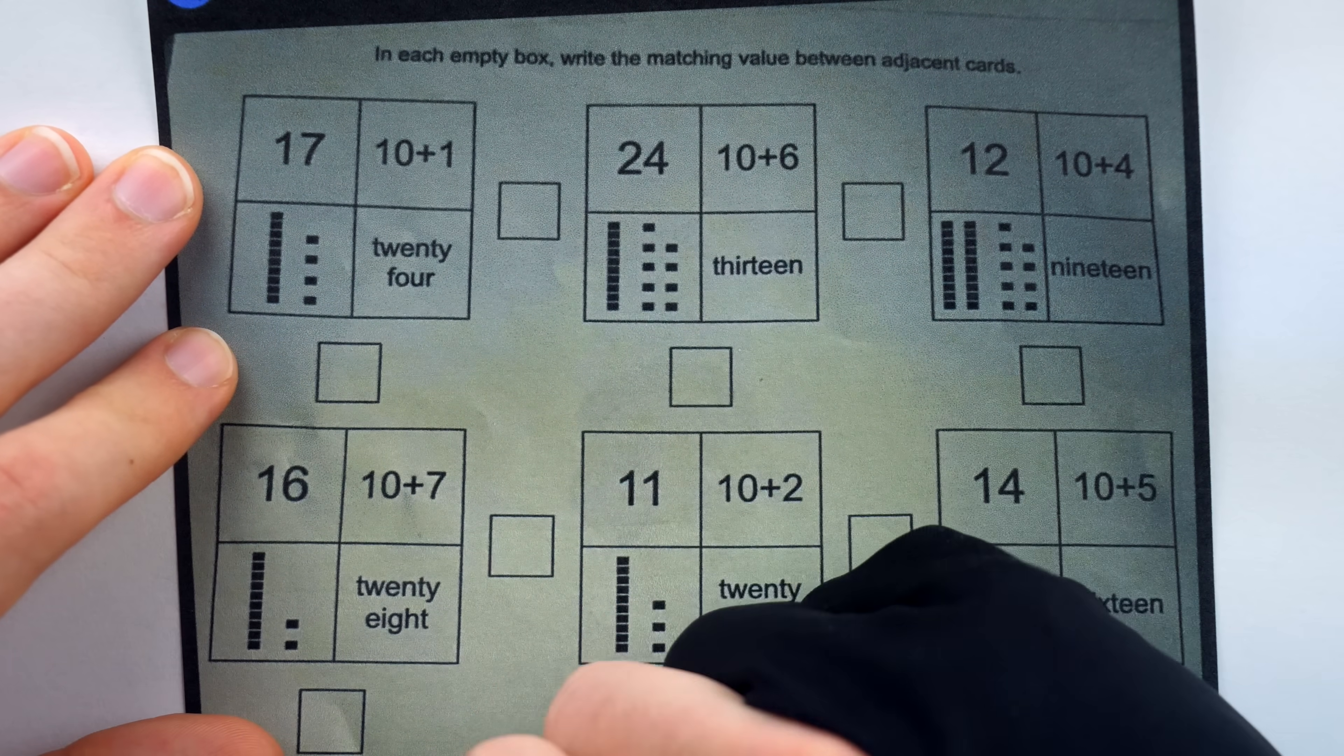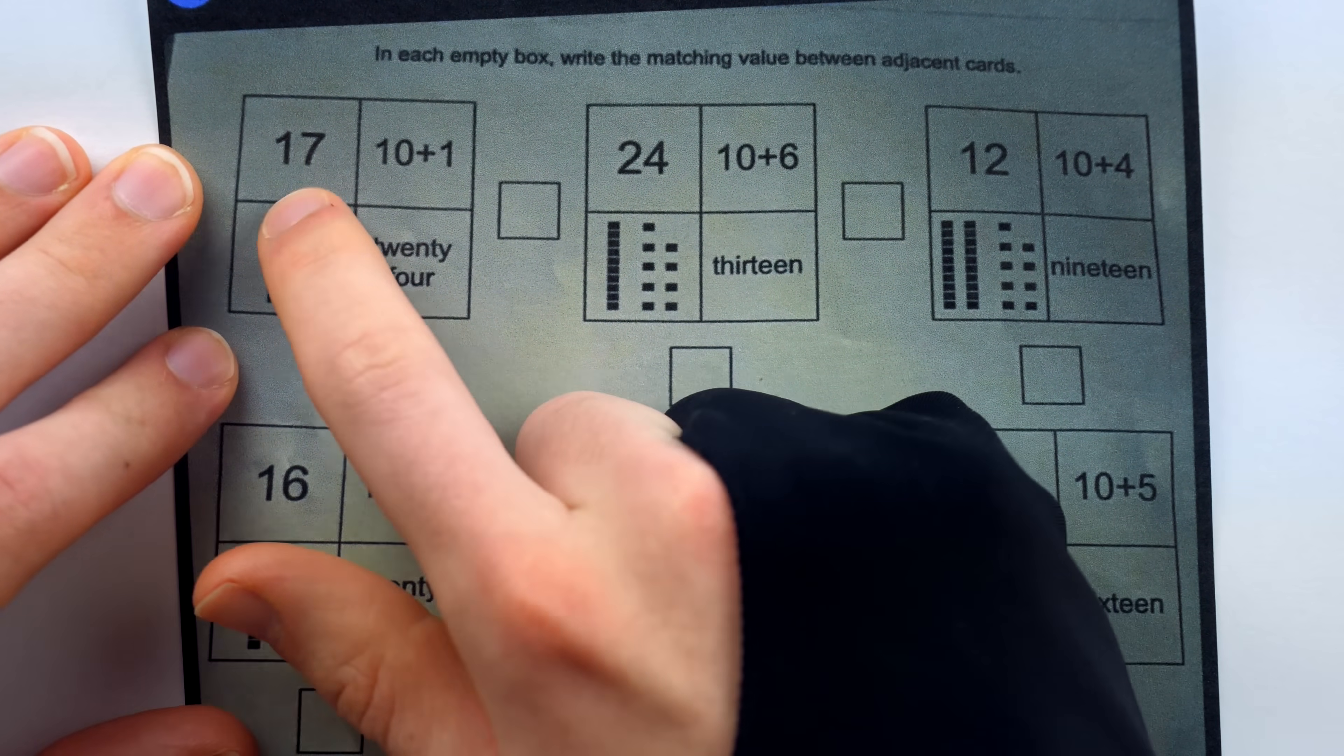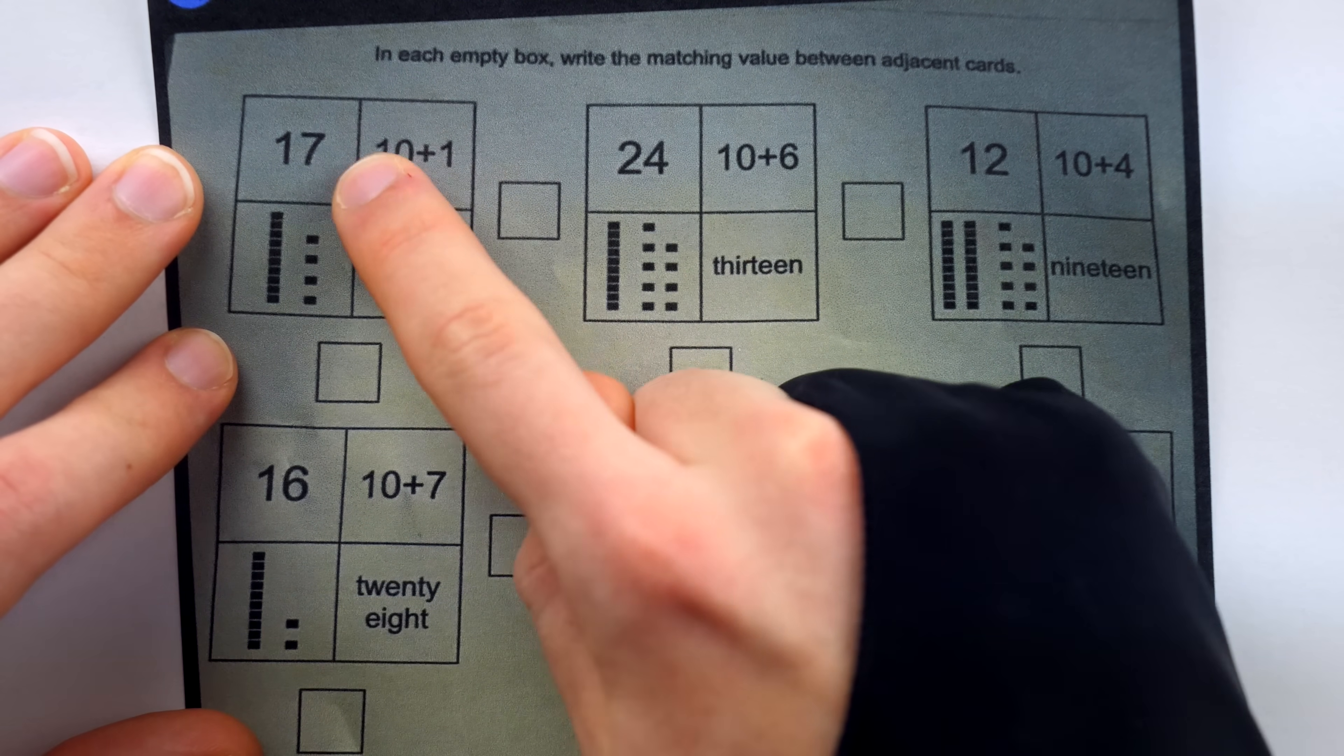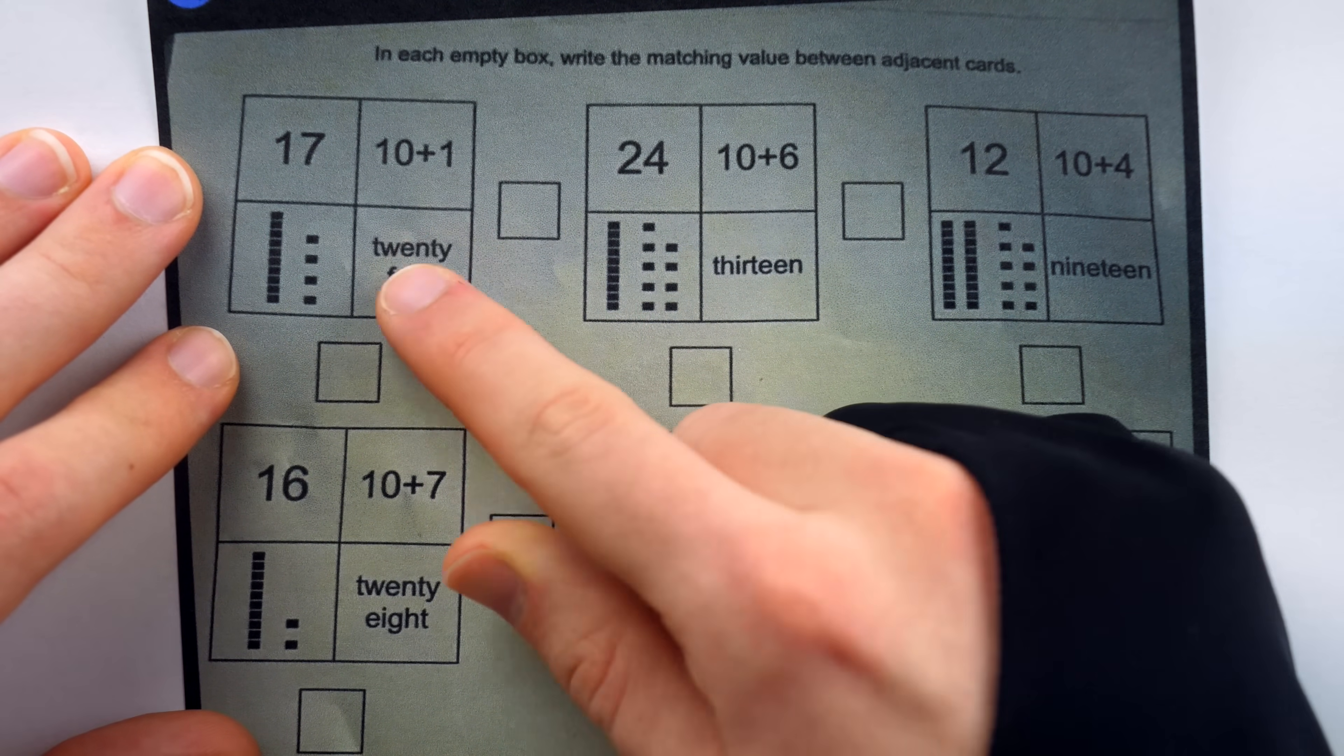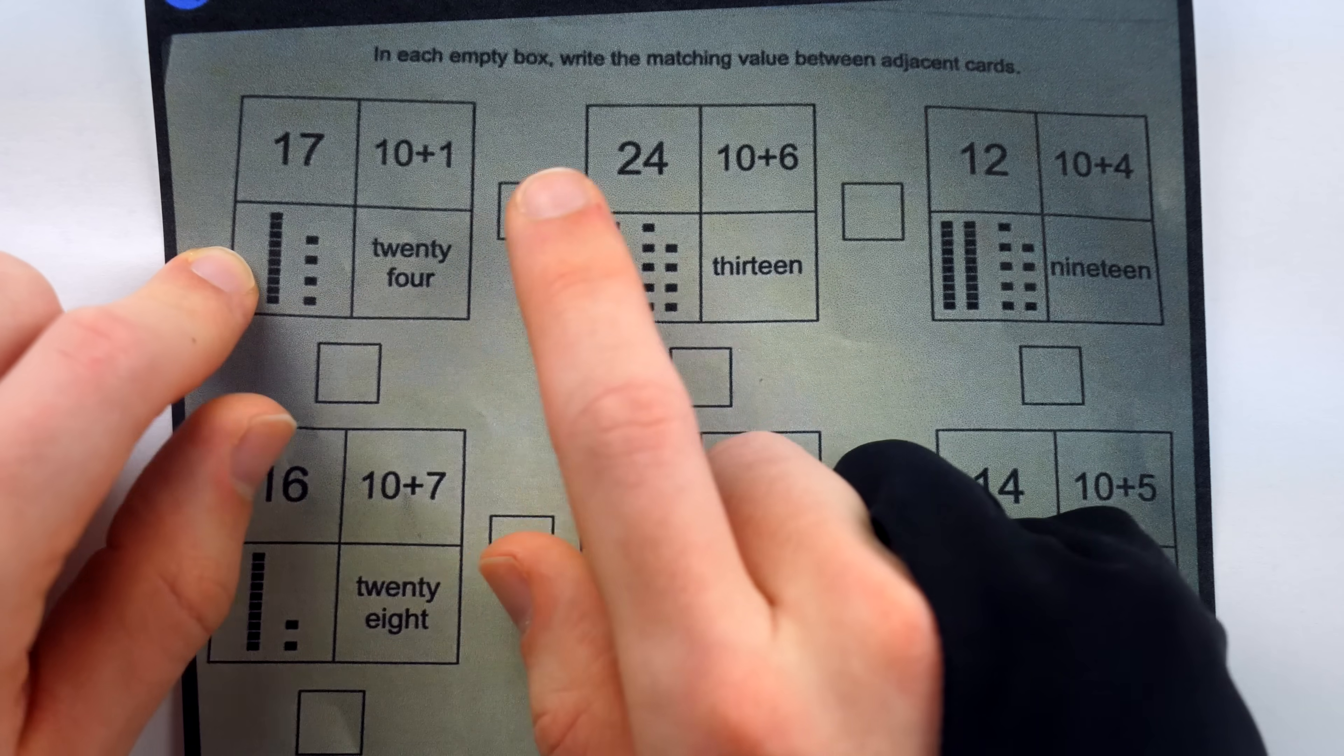Each box has four numbers represented four different ways: just normally, represented as basic arithmetic, represented in words, and represented with base 10 blocks.